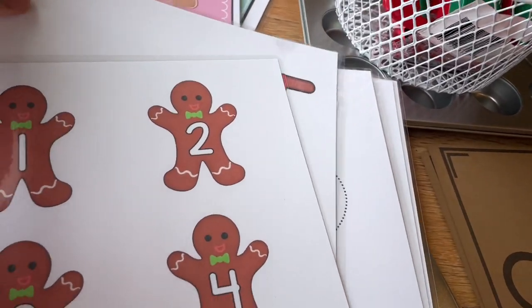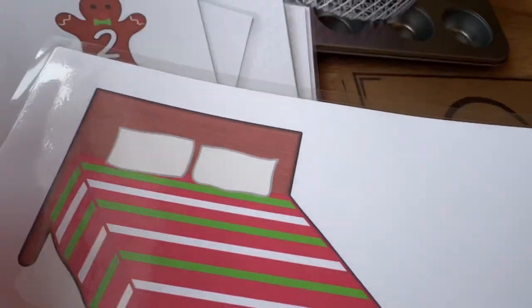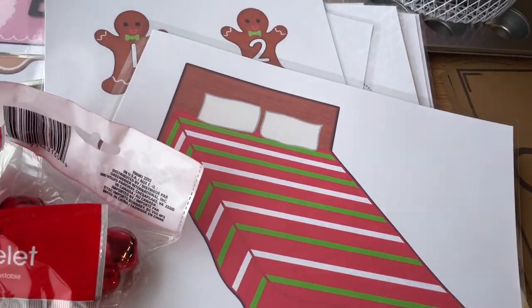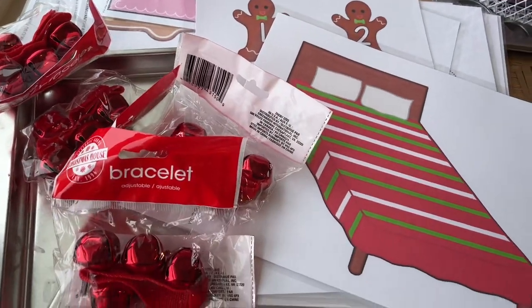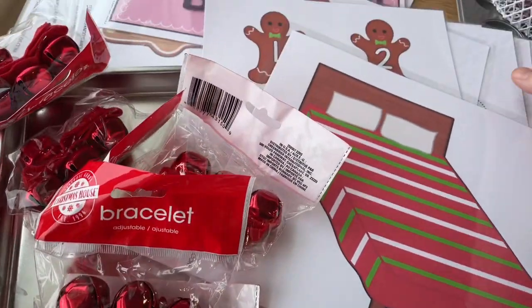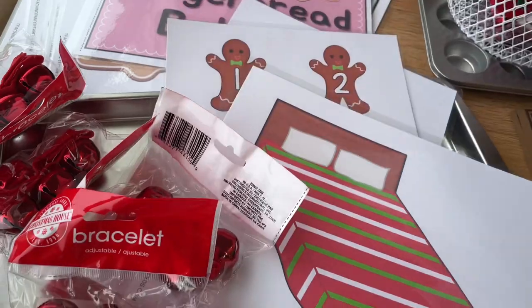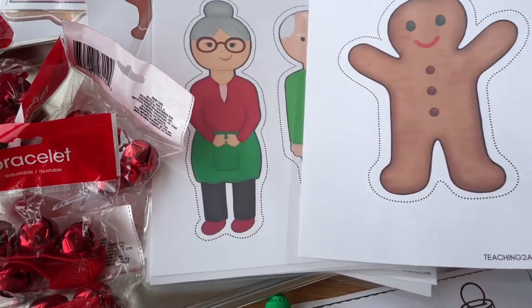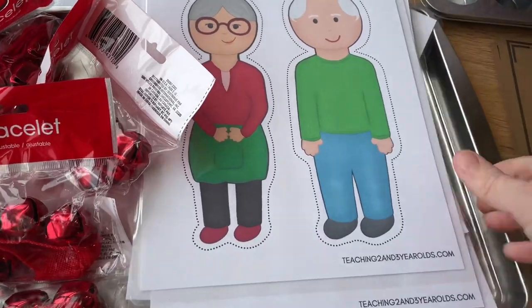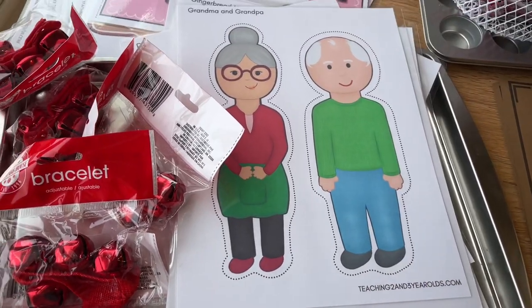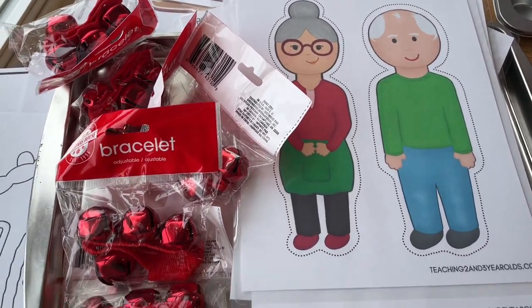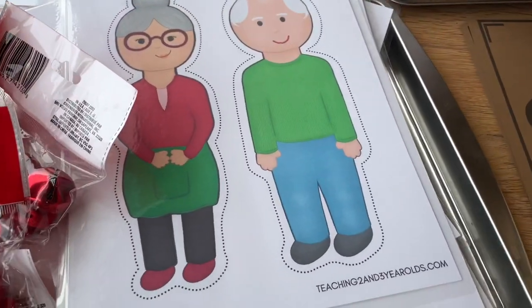For circle time, these were cute little props that were brand new ones by teaching two and three year olds. Also, I found these little jingle bell bracelets and so those will be fun to sing jingle bells with. And then also we have the gingerbread man story props. So I will either put these on a big stick or put velcro on them. I might try to make a belt board for these. Either way, I think those will be great.